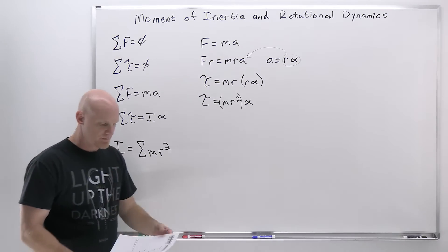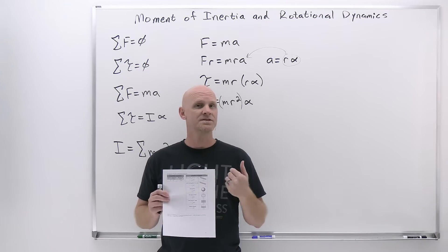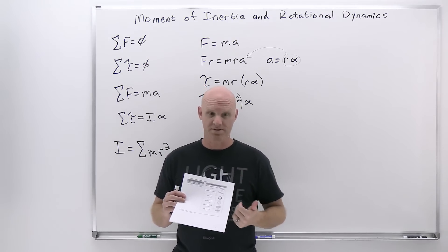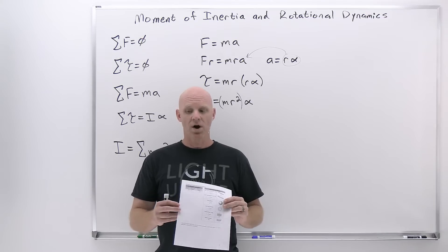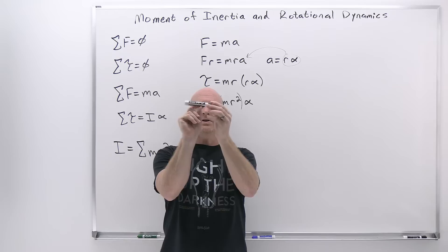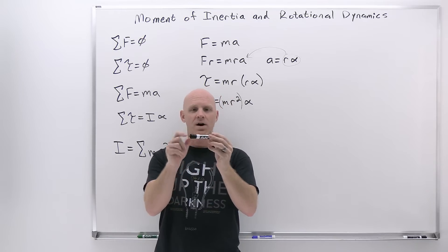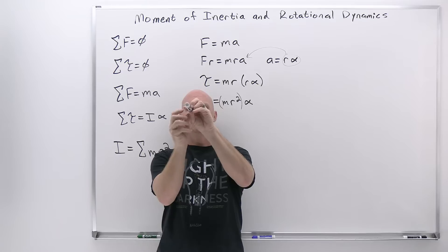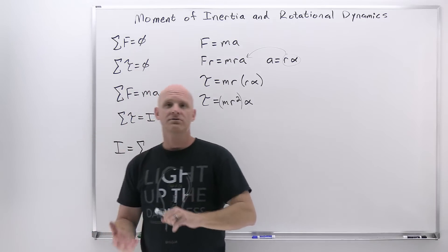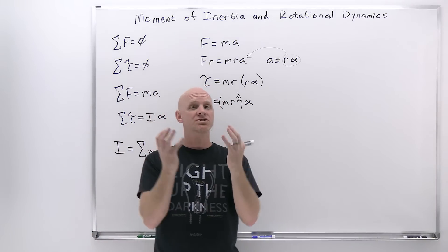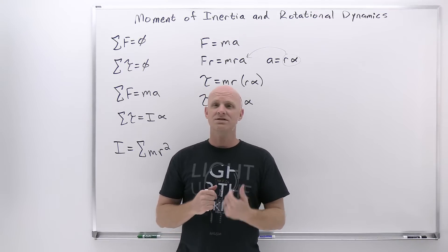For more complex shapes — and I've put a bunch of them on the study guide — these are formulas you might encounter. Typically these aren't things students have to memorize; they're typically supplied. For a rod rotating about its center, the moment of inertia is one-twelfth mL², where m is the mass and L is the length. If it's rotating around one end, it's one-third mL². There are also formulas for a solid sphere, a hollow spherical shell, a solid cylinder or disc, and a hollow cylinder or disc.